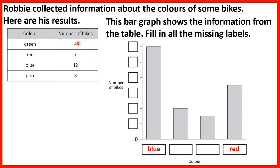Then we have 4 bikes that are green, so that will be this bar here. And then the smallest number of bikes is 3 and that's for the colour pink, so the smallest bar on our bar graph will represent pink bikes. But now we need to fill in these numbers at the side.